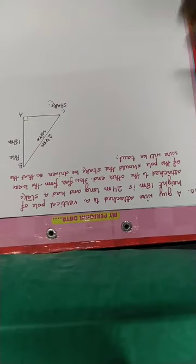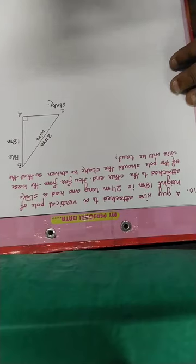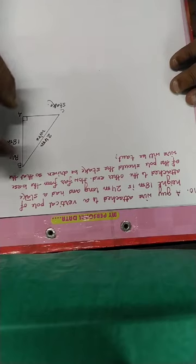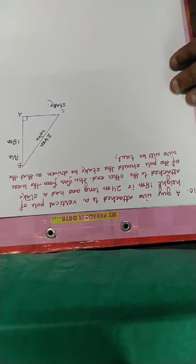Next exercise 6.5, question number 10. A guy wire is attached to a vertical pole. The vertical pole height is 18 meters. The wire is 24 meters long.